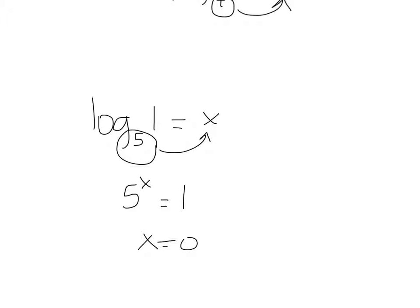X would have to equal 0 in that case. 5 to the 0 is what gives you 1. So anything where I have, I could do log of 273 of 1 is equal to x. X would equal 0. 273 to the 0 is what gives you 1. So these are all pretty basic things that would be on the non-calculator section.